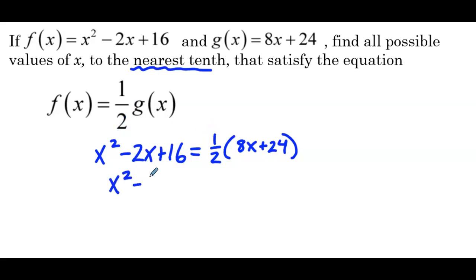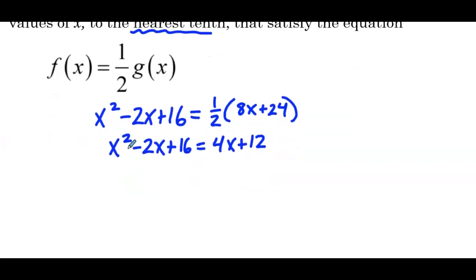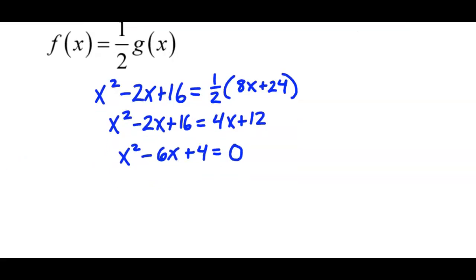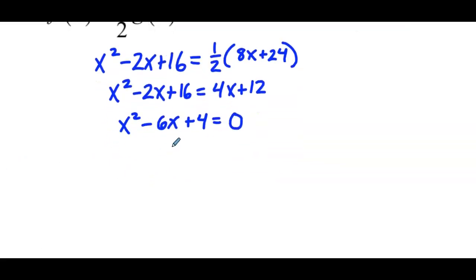We'll start by distributing the 1 half on the right side, so that's equal to 4x plus 12. We have a quadratic equation. In order to solve, we need equal to 0, so we'll subtract 4x from both sides. So we have x squared minus 6x, subtract 12 from both sides, plus 4 equals 0. And looking at that trinomial, it does not appear to be factorable.